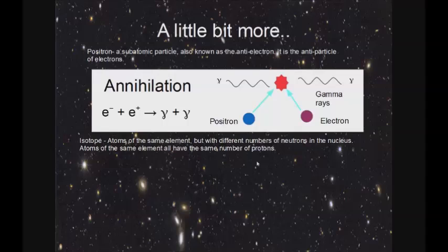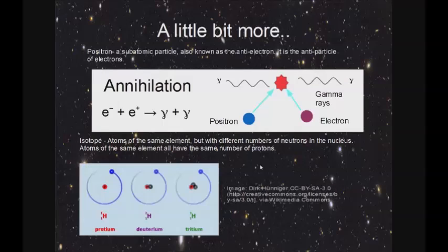Isotopes are atoms of the same element but with different numbers of neutrons in the nucleus. Atoms of the same element all have the same number of protons, although it is possible for them to have different numbers of neutrons. For example, these are all isotopes of hydrogen — you can see that they all have one proton, but they have different numbers of neutrons.